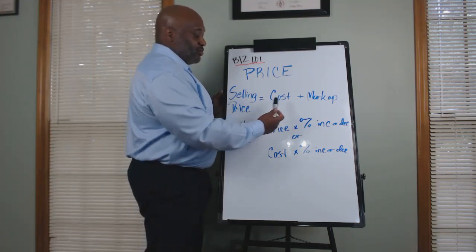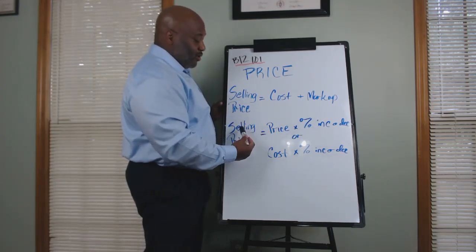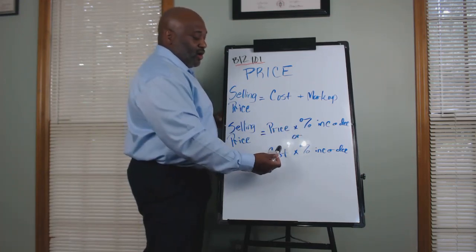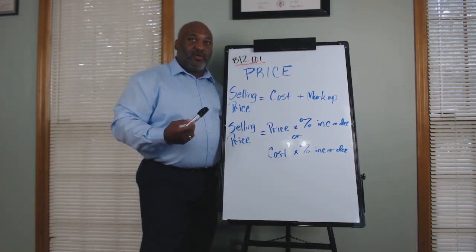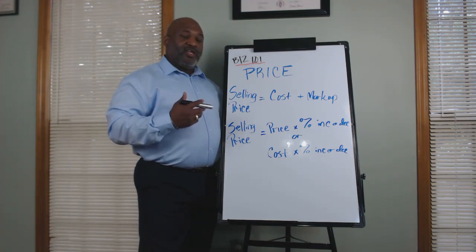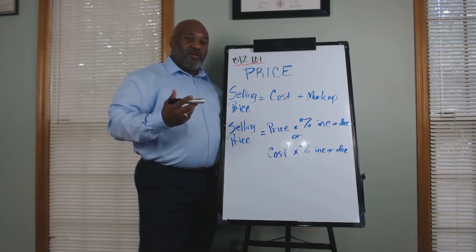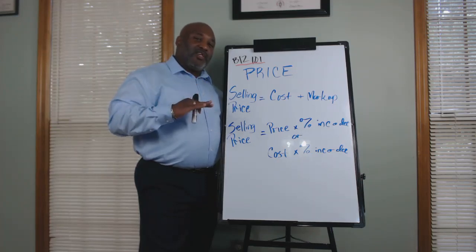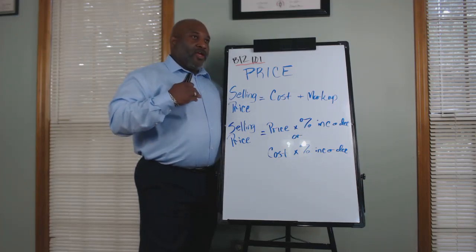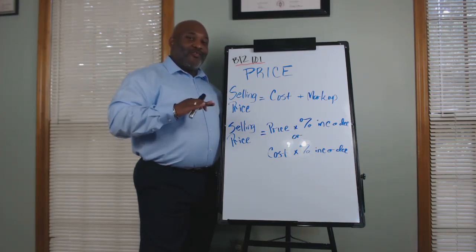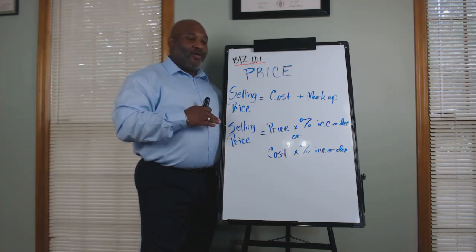Those are the three ways we look at in terms of deriving your price. The formulas are: cost plus markup, or price times a percentage increase or decrease, or cost times a percentage increase or decrease. Regardless of which one, I can't say which one is better or worse. These are things you need to look at to get your selling price — it's so important because if you don't have the correct selling price and you can't cover your costs, you won't break even or, most importantly, have any kind of profit.